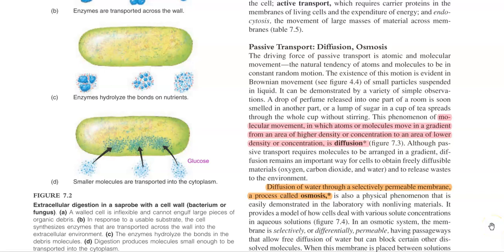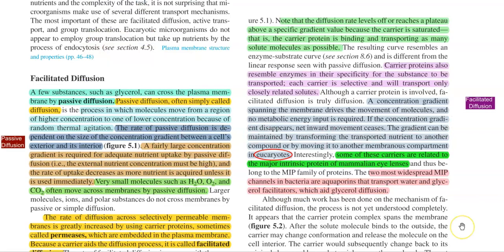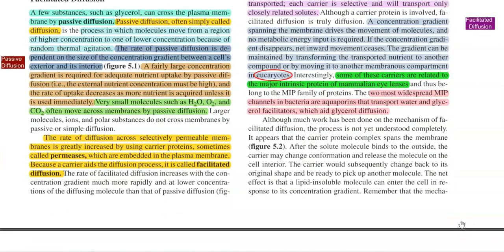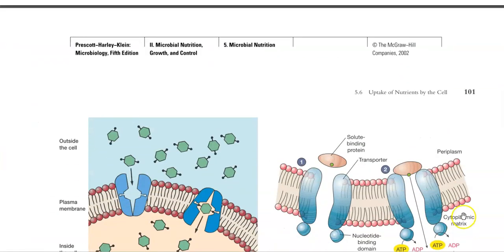In this screencast lecture, we will try to understand about diffusion — that is simple diffusion and osmosis, which are all coming under the category of passive transport — and then another form of diffusion, that is facilitated diffusion, which will be mediated with the help of some special proteins embedded in the cells.